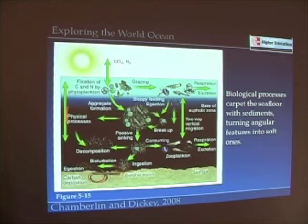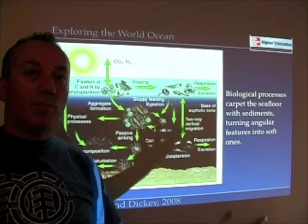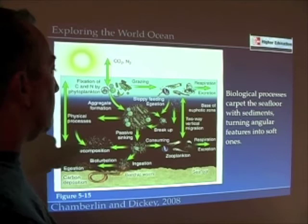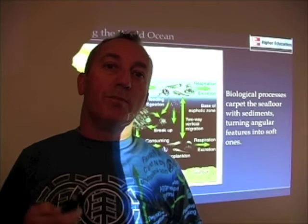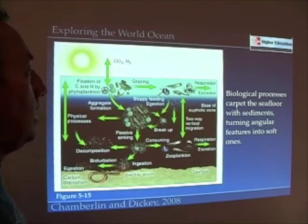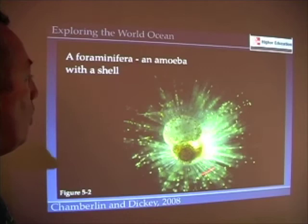Figure 5-15 shows all the different kinds of biological activities that create material ending up on the seafloor, giving it a kind of softness. Those fluffy muds and sediments you often see in pictures of abyssal plains or shallow areas are largely formed from biological processes. In fact, half the material we find at the very bottom of the ocean comes from biological activity, making biology equally as important as geology in shaping the seafloor.